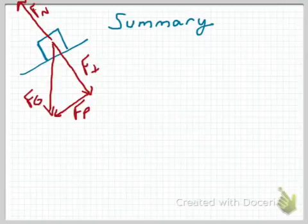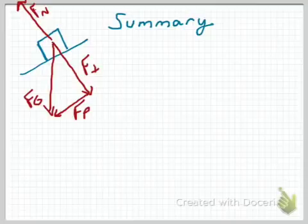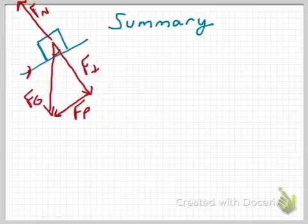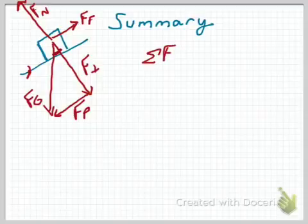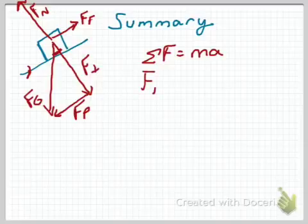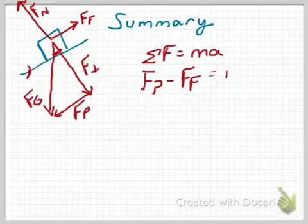To summarize problems at an incline: if we have an object sitting on an incline, our basic free body diagram has the weight acting straight down, which we break into components. We know that the angle of the incline matches the angle of that vector triangle. The normal force always acts perpendicular to the surface. If we have friction, it's going to go against the direction the object is moving. To sum up the forces, we use Newton's second law — the sum of forces equals mass times acceleration. It's always going to be that parallel or pulling force minus friction equal to Ma.